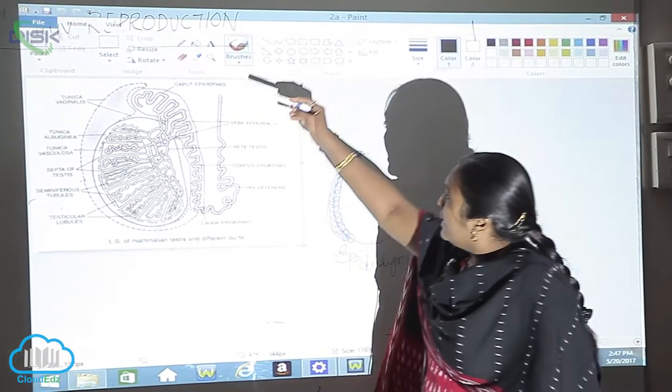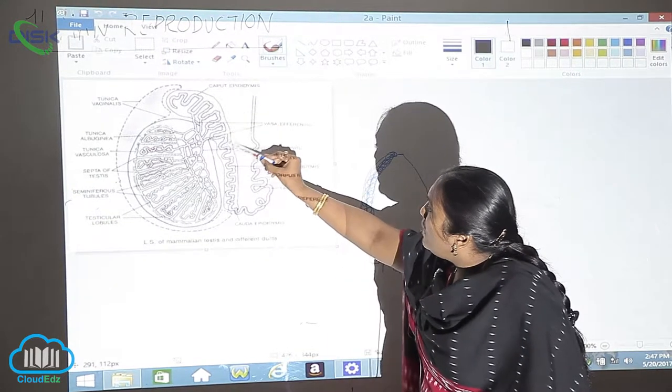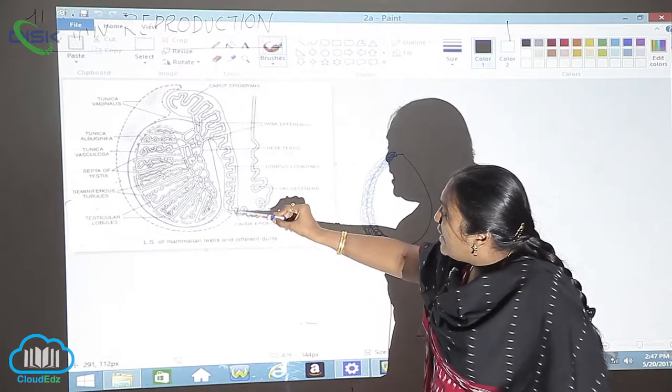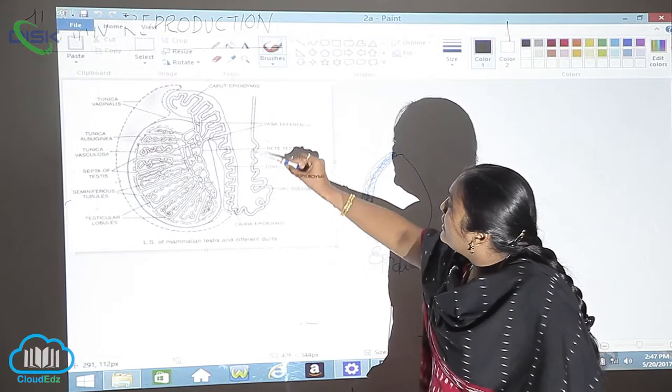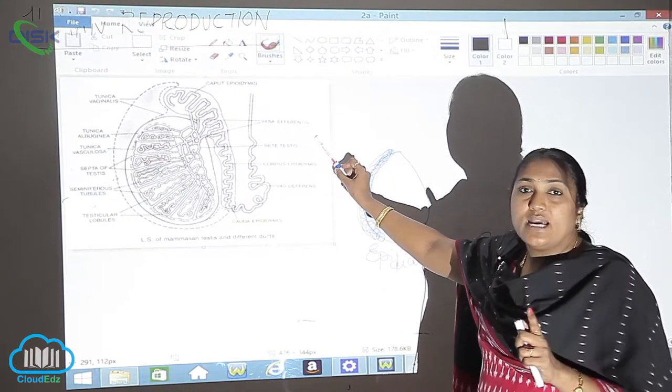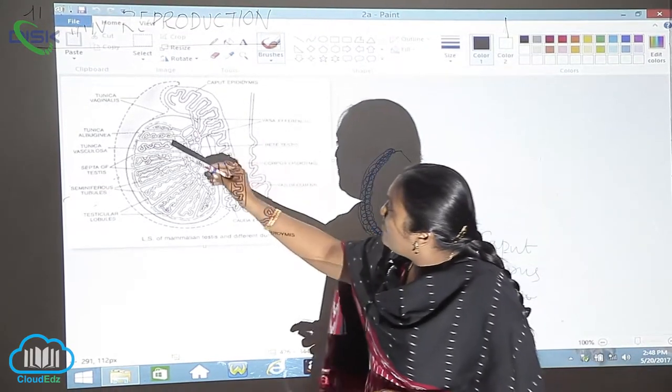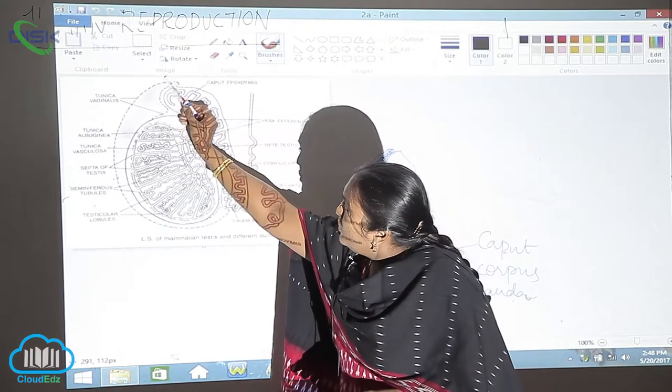Let us see this. As you can see, these are the tube-like structures which are directly connected to the vasa efferentia. It is directly connected to the vasa efferentia.